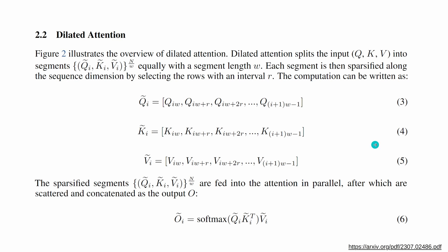What is dilated attention? It is rather easy. Like in self-attention, you use three tensors. What you do is split those tensors into segments. Those segments have an equal segment length called W. Each segment is then sparsified — filled with zeros in the tensor structure — given a specific interval R. That's dilated attention.